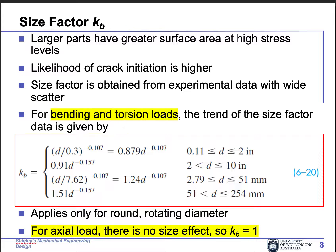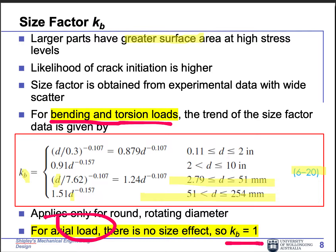Kb is the size factor. If the part is larger, it has a larger surface area, meaning more area can have problems — so larger area is penalized. We use equation 6.20 with two equations based on the diameter: if the diameter is small, use the top one; if large, use the bottom one to get Kb. However, there's a trap: Kb is only for bending and torsion. For axial loading, you may set it to 1. There's small print in the textbook — be extremely careful.